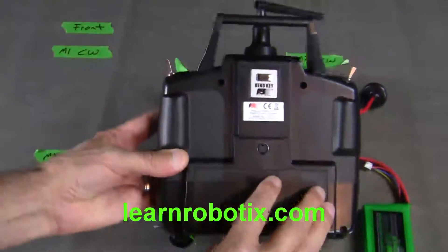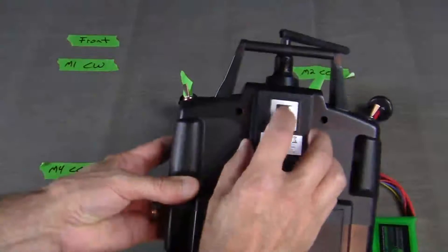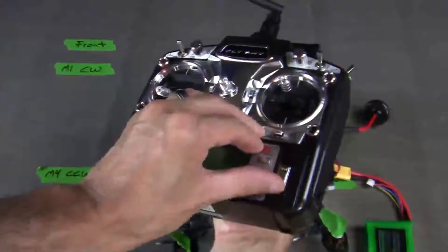With your radio off, turn to the back and you'll see a bind key. Hold your finger on the bind key, turn it over, and turn on the radio.